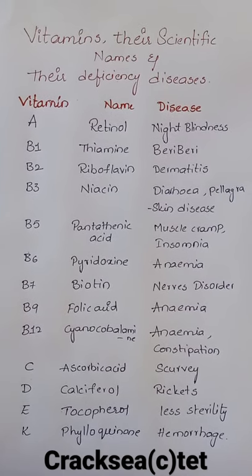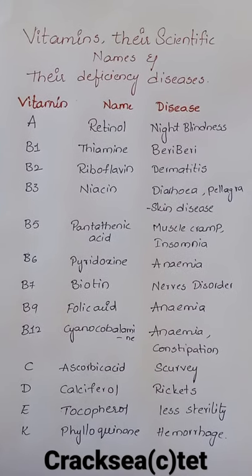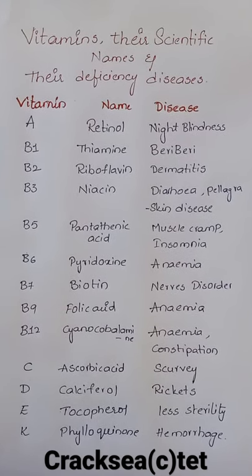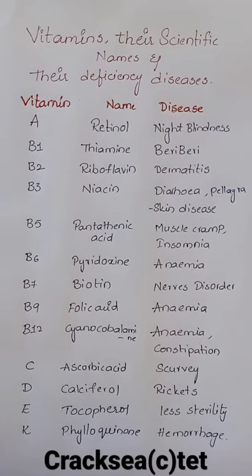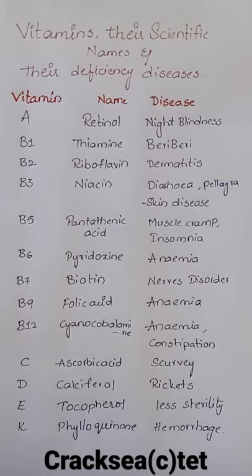B3, scientific name niacin, deficiency diseases: diarrhea and pellagra. B5, scientific name pantothenic acid, deficiency diseases: muscle cramp and insomnia.